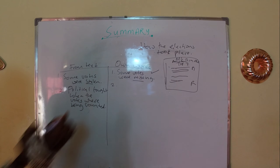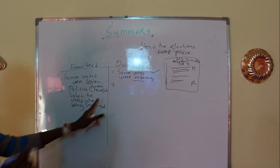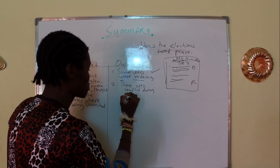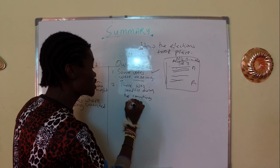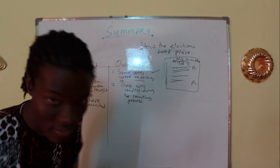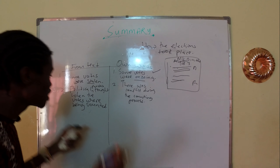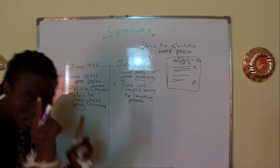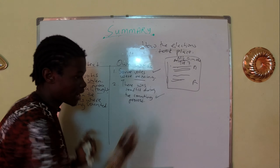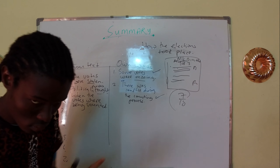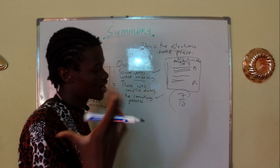For point two: 'Political parties fought when the votes were being counted' — you can change 'fought' to 'conflict,' so it becomes 'There was conflict between political parties during the counting of votes.' You can change the whole sentence if you're at that level, but at minimum just change one word. That's what you do — one word only and you get a mark. If they say seven points, you do this for all seven. If you have this table done, you have seven out of ten for the summary already.